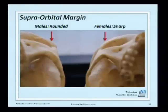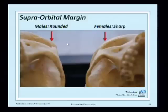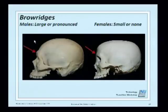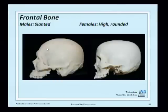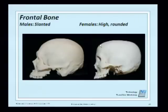The supraorbital margin, located on the superior portion of the eye orbit, is thick and rounded in males — assessed by feel — and a sharp ridge in females. Brow ridges can often be seen visually: males typically have a large or pronounced brow ridge, though this varies between populations; females often have a small one or none at all. We can also look at the shape of the frontal bone: in males it's more slanted, and in females it's higher, rounder, or more boldly projecting.